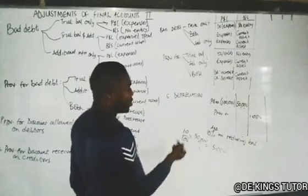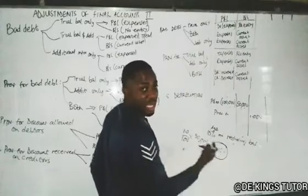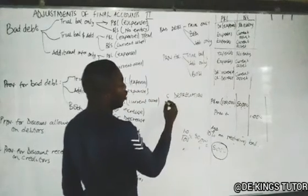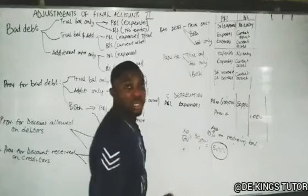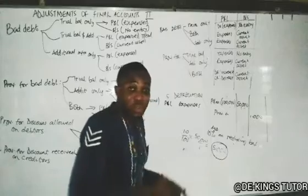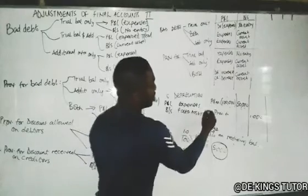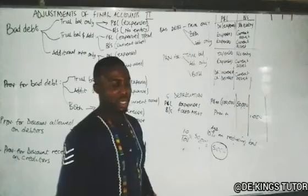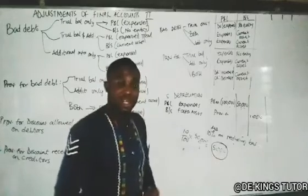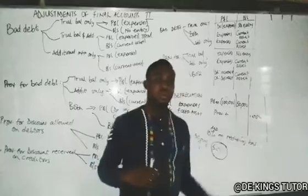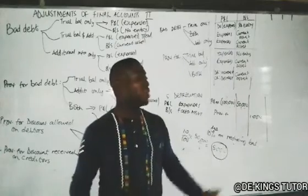For posting depreciation: the recently calculated depreciation goes to the expenses side in profit or loss. In the balance sheet, it is posted under fixed assets to reduce the asset value — that is, you accumulate by adding the trial balance provision to the newly calculated depreciation, then deduct from the cost to get the net book value. If there was no prior provision in the trial balance, just use the recently calculated amount to reduce the asset.